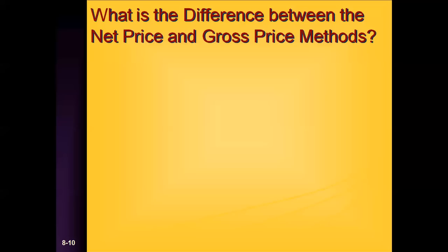We've talked about periodic and perpetual inventory systems and how those accounting transactions are recorded. Now we're going to talk about different ways of valuing inventories — specifically, the net price versus the gross price method. The primary difference is that in the gross price method, you're valuing the inventory at the list price. Purchases and purchase returns and allowances are recorded at gross price, which is essentially the list price.